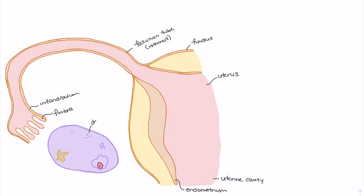Looking at the ovary, we have follicles in various stages of development. The follicles labeled here would technically be primary follicles heading into secondary follicles. For this video we're most concerned about the mature follicle, which is the follicle that's actually going to release the ovum. I talked more thoroughly about follicle development in a previous video.